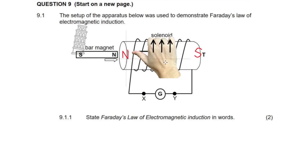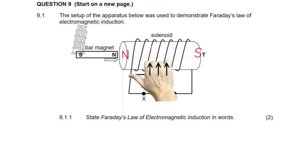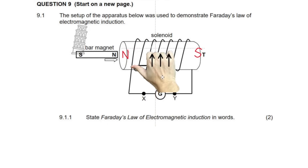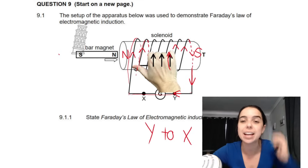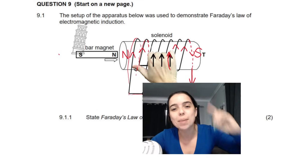With my thumb pointing toward the north and looking at how my fingers curl, the current is going up the front and down around the back of the coil. So the current goes up the front, down around the back, continuously. This means the current is travelling from Y to X through the galvanometer. It takes a bit of visualizing and thinking outside the box, but the right hand rule demonstration should help you see it.